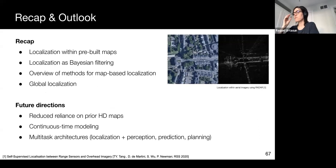So, to recap, we have first described localization with previous maps. Then, we introduced Bayesian filtering for continuous localization. Here, we discussed Kalman filters, particle filters, and histogram filters. We then gave an overview of methods for map-based localization. And finally, we discussed global localization and its challenges.